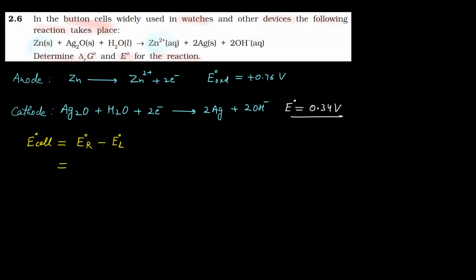So E° cell equals E° right, which is cathode. Cathode reduction potential is 0.34 minus left side which is anode. Its reduction potential is, oxidation potential is plus 0.76, so reduction potential becomes minus 0.76 volts. Calculate this: 0.34 plus 0.76 equals 1.10 volts. This is the E° cell for the given reaction.